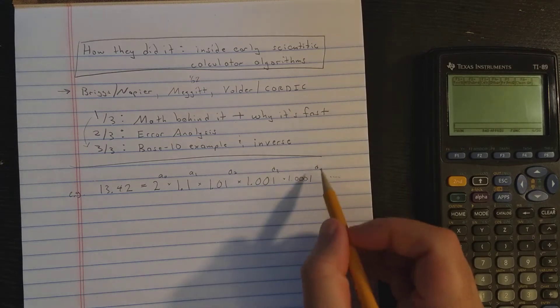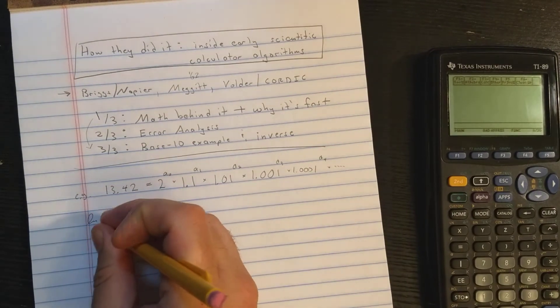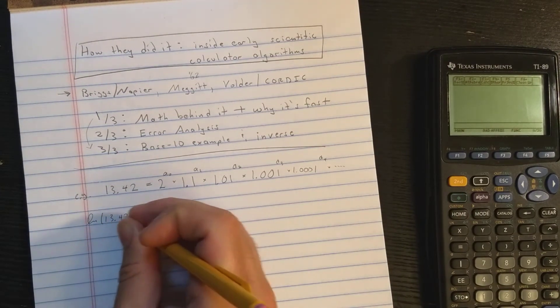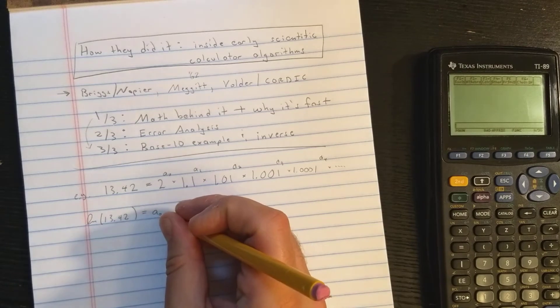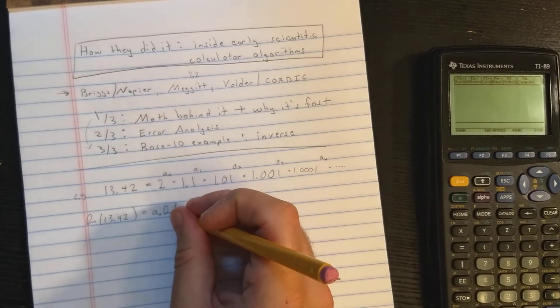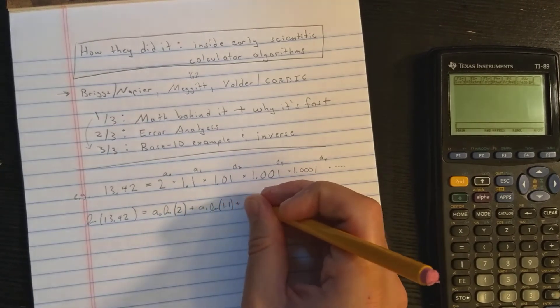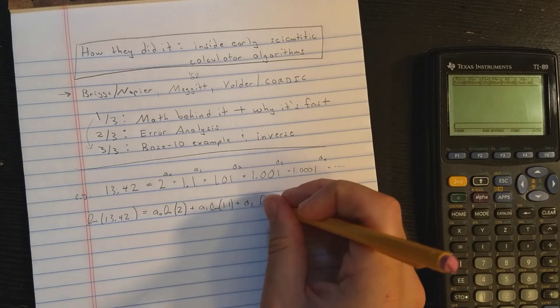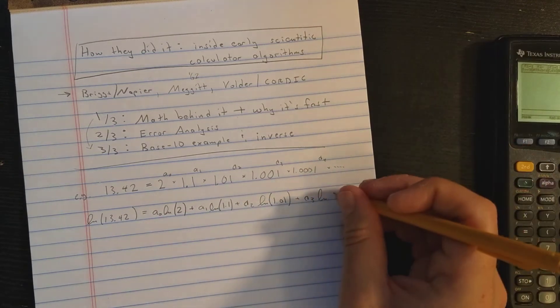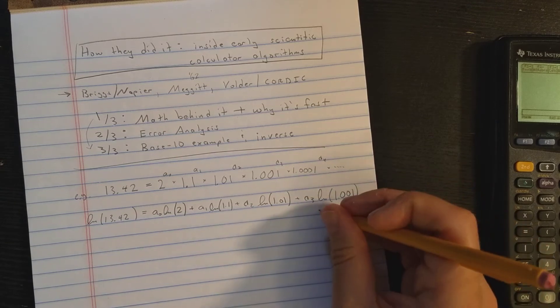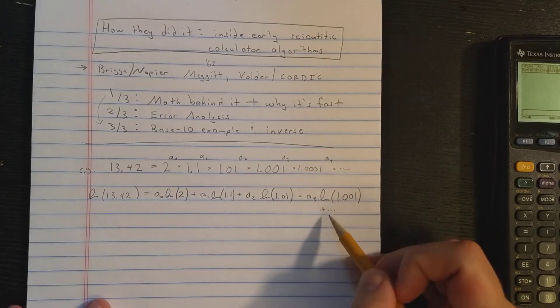This gives us an infinite product, but of course we're going to stop that at some point and have a finite product. Then the idea is the logarithm of 13.42, taking the logarithm of this, is simply A0 times natural log 2, plus A1 times natural log 1.1, plus A2 natural log 1.01, plus A3 natural log 1.001, and so on. Of course, if I cut this off and I have a finite product, then I'll cut this off and have a finite sum.